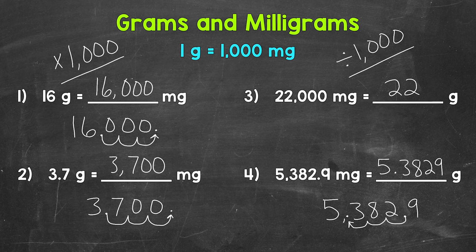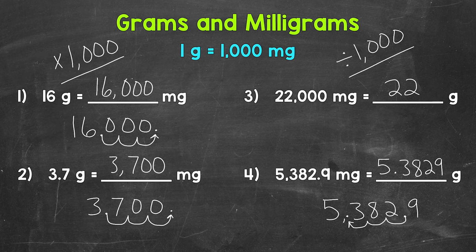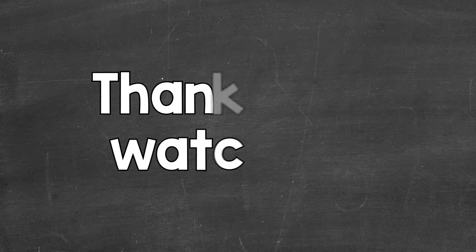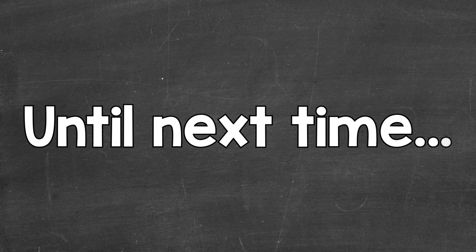5,382.9 milligrams equals 5.3829 grams. So there you have it — that's how you convert between grams and milligrams. When we go from grams to milligrams, we multiply by 1,000, and we can do that by moving the decimal three times to the right. When we go from milligrams to grams, we divide by 1,000, and we can do that by moving the decimal three times to the left. I hope that helped. Thanks so much for watching. Until next time, peace.